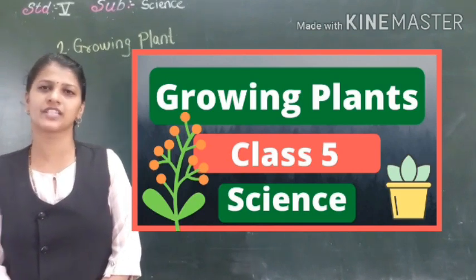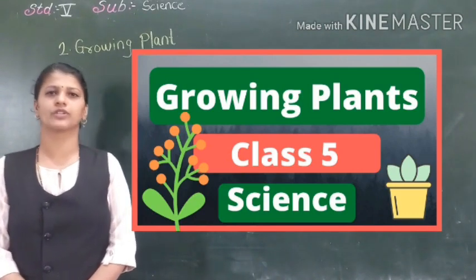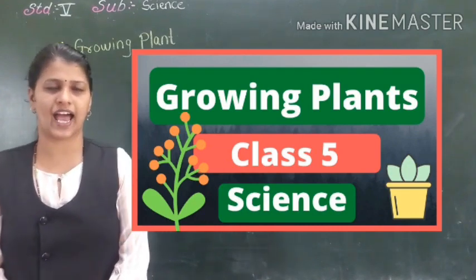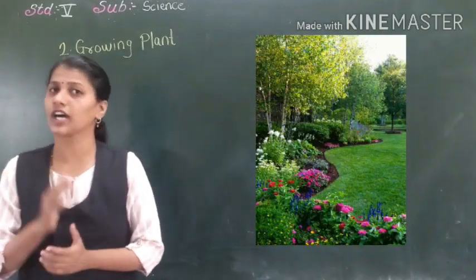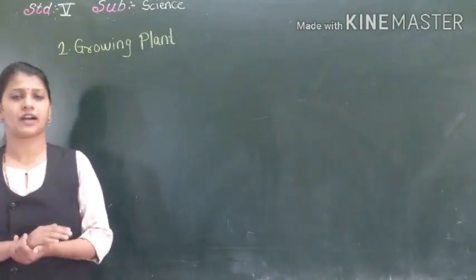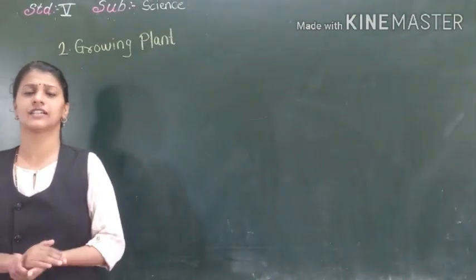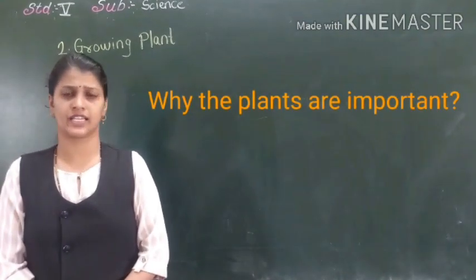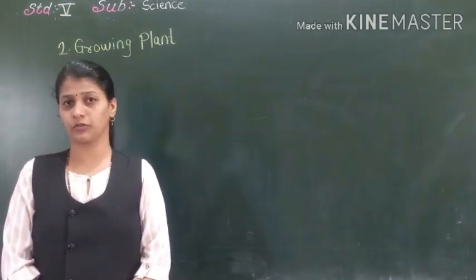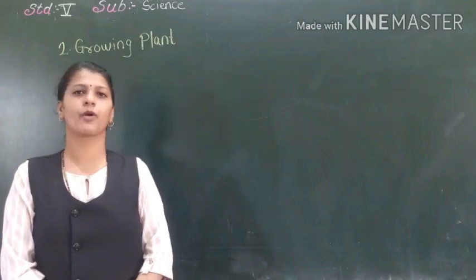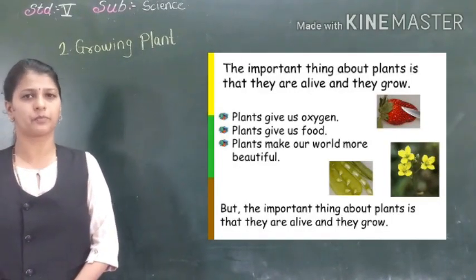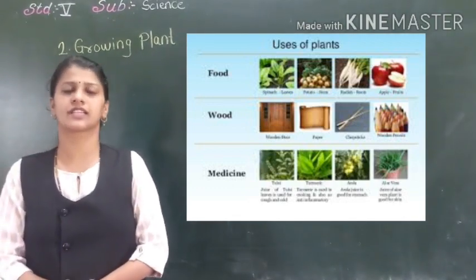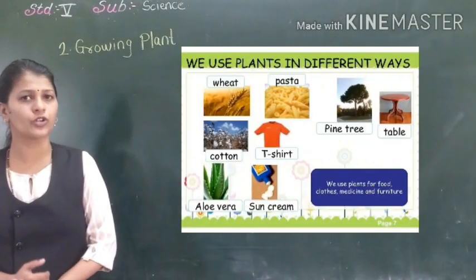We are going to discuss about growing plants with the help of seeds, and how the dispersion of seeds takes place. You must have seen different types of plants in your garden, in your school garden, everywhere. Can you tell me why plants are important? Is it necessary to grow plants? Yes, plants are very important. Plants give us medicine, plants give us food and vegetables.